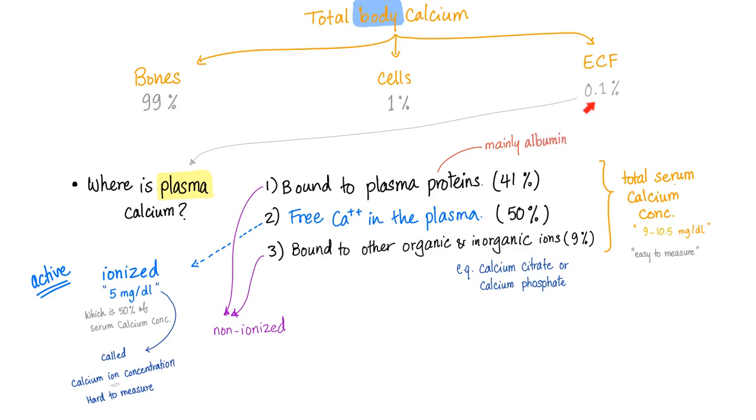This calcium is little in amount, yet robust in activity. Where is the ECF calcium? It's in the extracellular fluid. Some of it is bound to plasma proteins. Another part is the free calcium in the plasma. This is what you call the plasma calcium. And some is bound to other organic and inorganic ions, like calcium citrate or calcium phosphate. One out of three are non-ionized. Therefore, we couldn't care less.